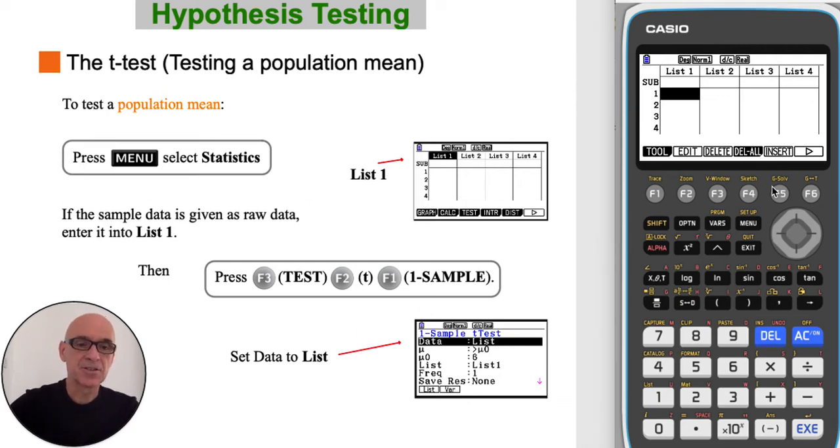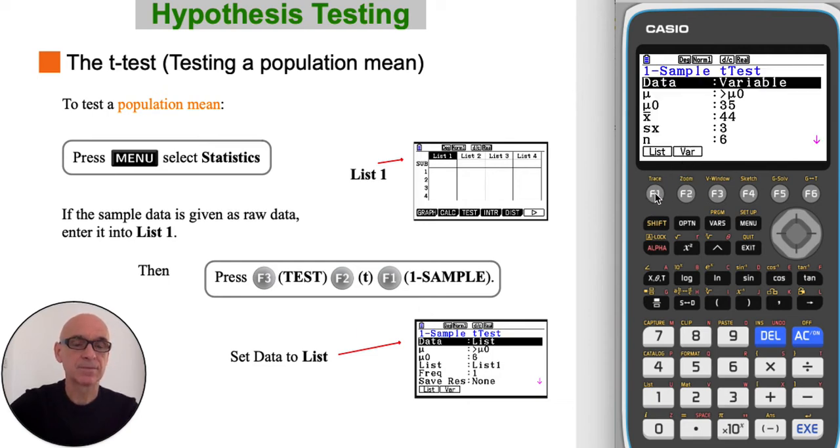Once the data is entered, press F6 twice to get back to the main statistics menu, and press F3 for a test, F2 for a t-test, and F1 for a one-sample test. If you have entered the data into list 1, you would then select data as list by pressing F1.